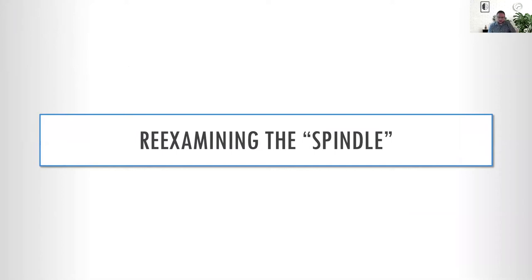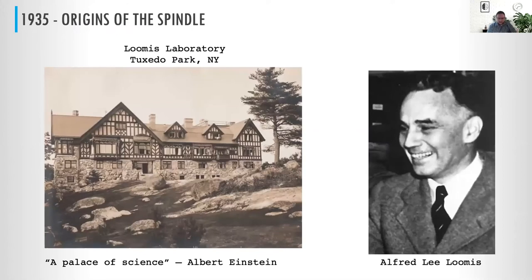To discover the spindle, you'd have to go back to 1935. You'd need a tycoon who was a self-styled gentleman scientist — someone who got wealthy by divesting from the stock market just before the crash, investing in gold, and reinvesting at pennies on the dollar after. That person happens to be Alfred Lee Loomis, a really fascinating character.